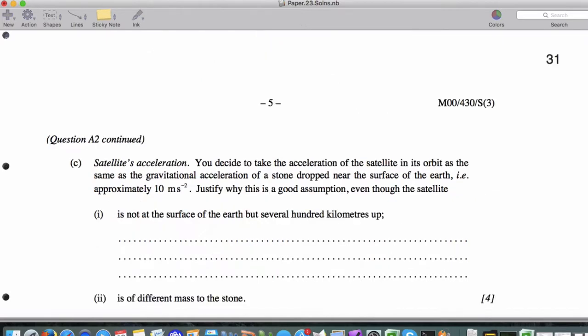The satellite's acceleration. Okay. The acceleration is the same as the stone. So let's actually figure out why would this be a good assumption to assume the satellite's actually accelerating at freefall in a circle. Let's be clear.